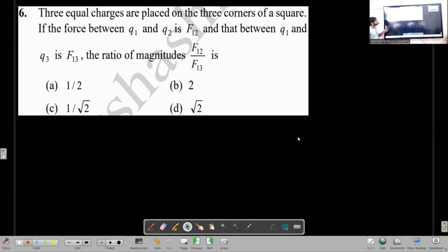If the force between q1 and q2 is F12 and that between q1 and q3 is F13, the ratio of magnitudes F12 by F13 is what?